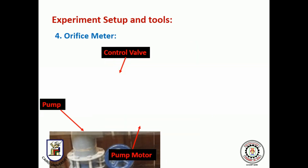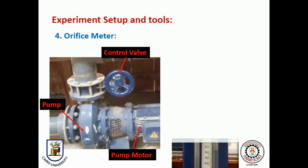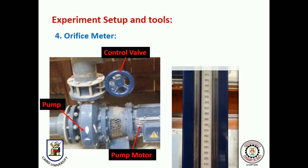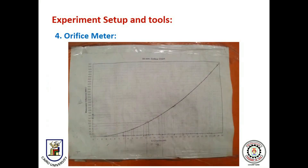Number 4: the orifice meter. The orifice meter is the device which measures the discharge flowing in the flume. It has three attachments. The first is the control valve, used to open the flow and decrease or increase the discharge. It is connected to a pump which takes water from the ground tank. The second is the manometer, which is the actual orifice meter — we take the difference between the two water levels in the small tubes. The third is a chart designed for this orifice meter to convert the difference of water level in the manometer into discharge, as we will see in detail later in this video.